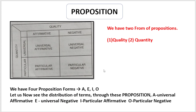Propositions, broadly speaking, can be qualitative or quantitative. From a quantitative point of view, there are universal propositions and particular propositions. Universal propositions include universal affirmative and universal negative, while particular propositions include particular affirmative and particular negative.